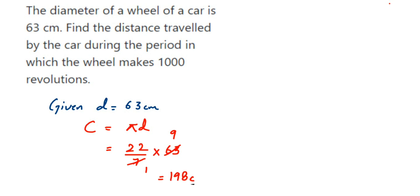It is given in cm, so for 1, the circumference is 198 cm. Like I just said before, 1 rotation or 1 revolution is equal to 1 circumference. So for 1000 revolution or for 1000 rotation, how much it will be?